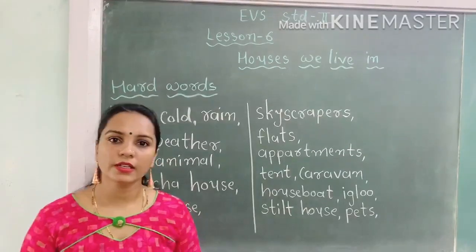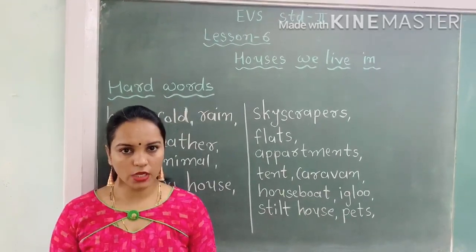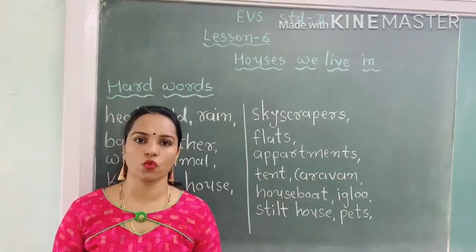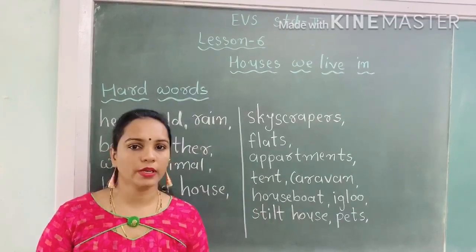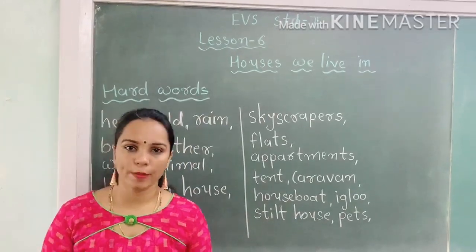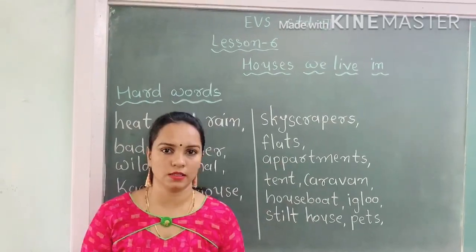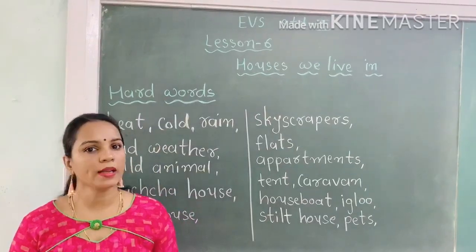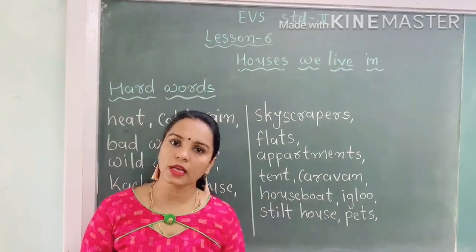Bad weather — bad weather यानी ऐसी condition, जिस दिन ज्यादा windy होता है, वो दिन या तो ज्यादा cloudy होता है या ज्यादा foggy होता है. Wild animal — wild animals वो हैं जो forest में रहते हैं. दो तरह के animals होते हैं: wild animals and domestic animals. Domestic animals को हम लोग हमारे पास रख सकते हैं, लेकिन wild animals को नहीं. जैसे कि dog, cat, horse, cow, bird, buffalo — उन सबको हम पास रख सकते हैं, लेकिन tiger, lion को नहीं रख सकते.